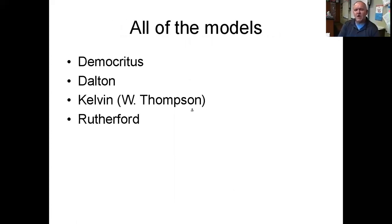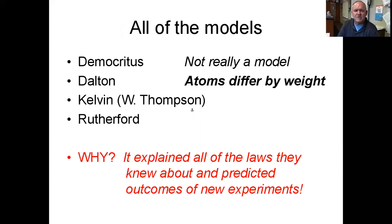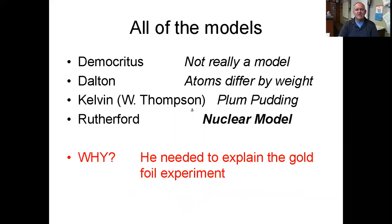Here's a quick summary of all the models. The Democritus model wasn't really a model — he just made it up. Then Dalton came along and gave us the first modern atomic theory, where atoms of different elements differed by weight, because it explained the experiments they were seeing. Then Lord Kelvin came up with the plum pudding model to explain how charges existed within the atom after J.J. Thompson showed that electrons existed and the atom still had to be stable. Finally, Rutherford came up with the nuclear model to explain the gold foil experiment — why alpha particles usually passed through, but every once in a while bounced off.